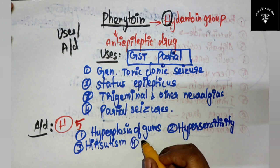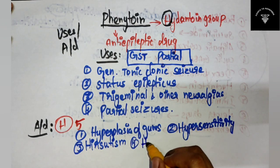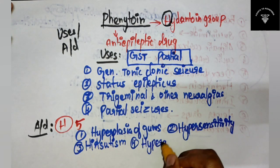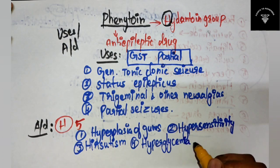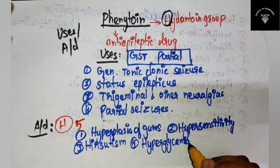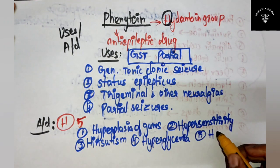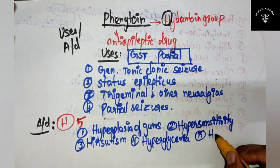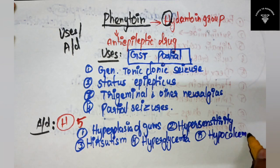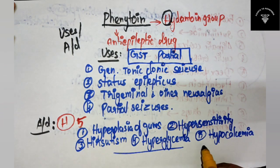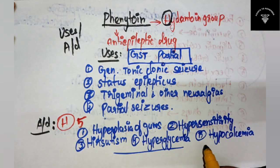Fourth H is hyperglycemia, which may be due to decrease in insulin release. And the fifth H is hypocalcemia. That's it about the adverse effects of phenytoin.